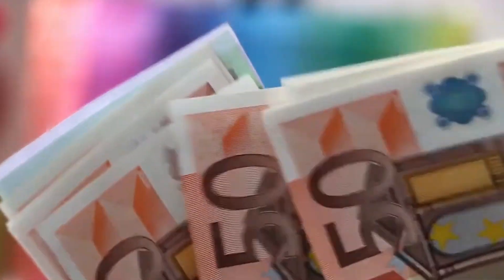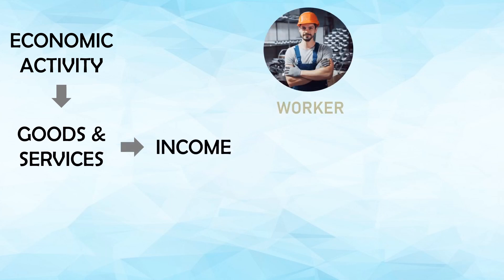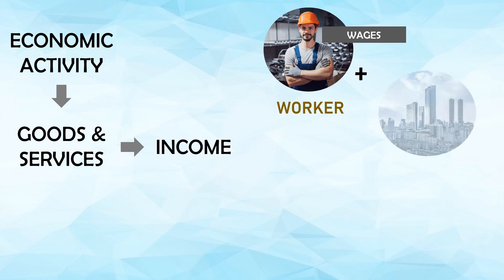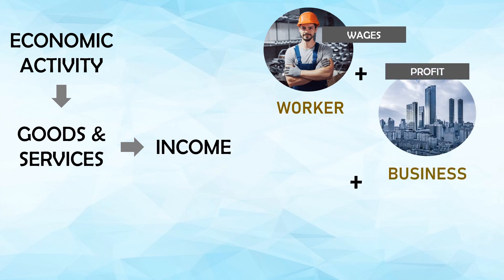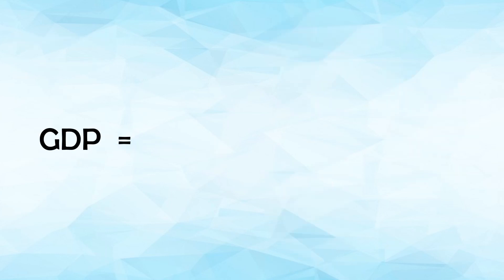The income approach is based on the idea that the total income earned in an economy should equal the total value of goods and services produced. The logic here is that all income generated must go somewhere — either to workers as wages and salaries, to business owners as profits, or to government as taxes. By adding up all these income sources, you get an estimate of the overall economic activity.